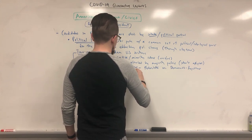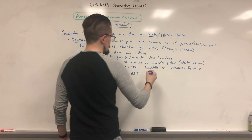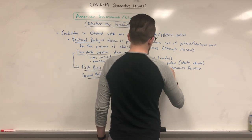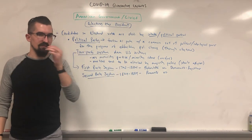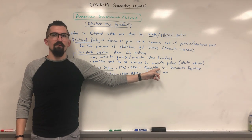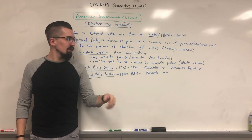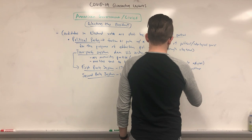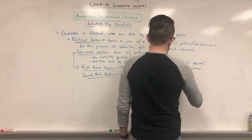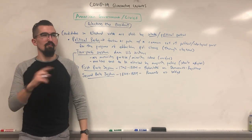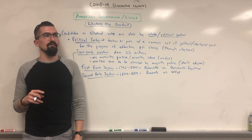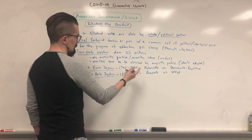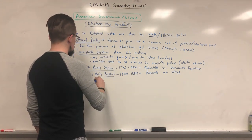From those ashes emerged the second party system, which lasted about 30 years. In this system we have the Democrats, who sort of merged out of the Democratic-Republican party over different economic disagreements as industrialization set in. The Democrats came out as a more protectionist-based set of ideals, and you also had the National Republicans who eventually became the Whig Party. This system was also short-lived, giving way to the third party system.